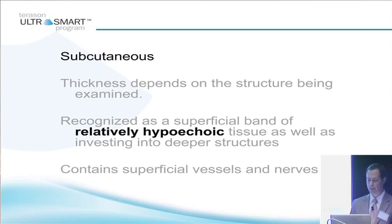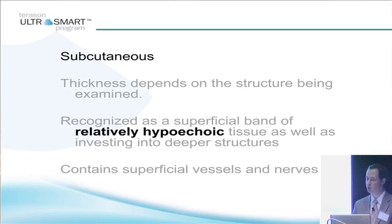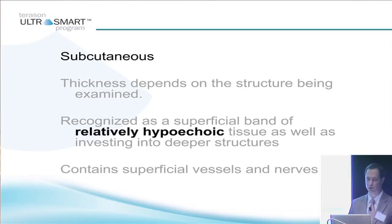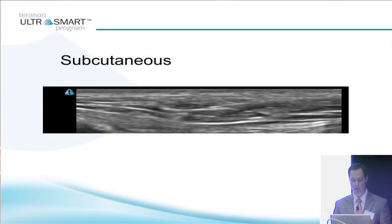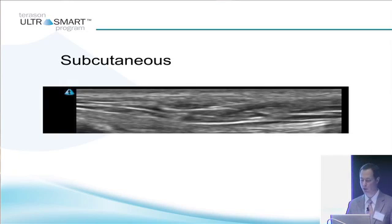Let's talk tissues. Subcutaneous tissue — the thickness depends on the structure being examined, and it usually looks relatively hypoechoic as it invests into deeper structures. It can contain vessels and nerves which are superficial and can also invest into deeper structures. Here's some subcutaneous tissue. It can appear sort of alveolar, hypoechoic, with small, thin, hyperechoic bands in there, and it's at the very top of your screen.